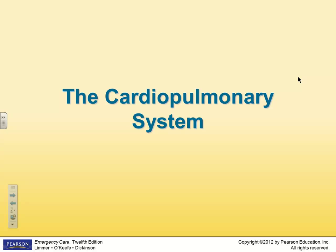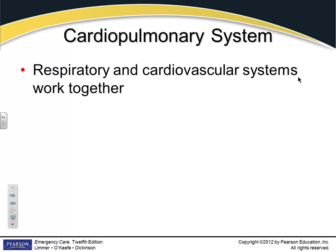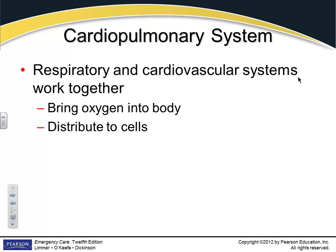The cardiopulmonary system — heart and lungs. The respiratory system and the cardiac system have to work together. We talked about the fluid, the pump, and the pipes. All that stuff can work, but if you're not getting oxygen in, it doesn't do any good. If you've got a lung problem or a blocked airway, everything else working doesn't matter. So they work together to bring oxygen into the body, spread it throughout, and distribute it to the cells.